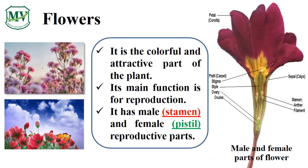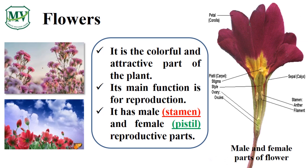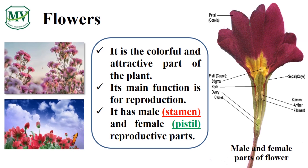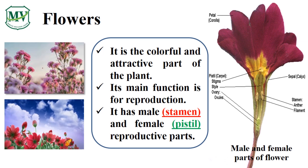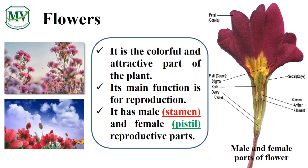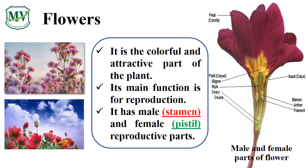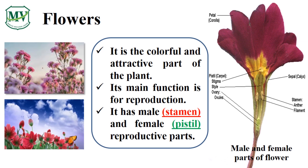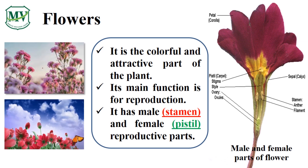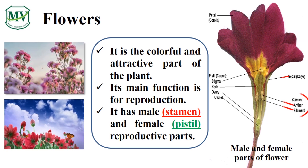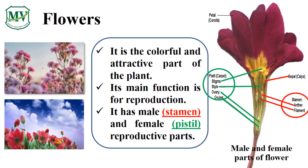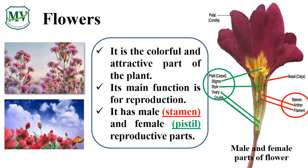A flower is the colorful and attractive part of the plant. Flowers also have reproductive parts. Stamen is the male reproductive part, while pistil is the female reproductive part.